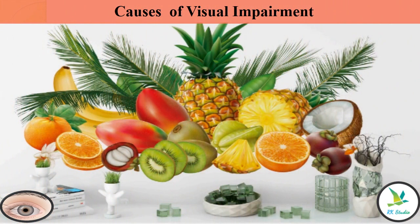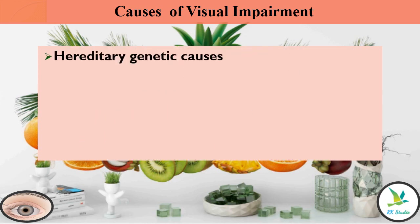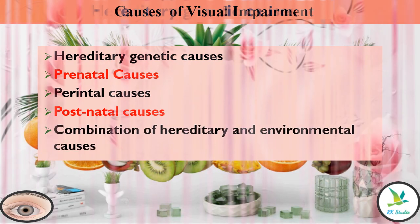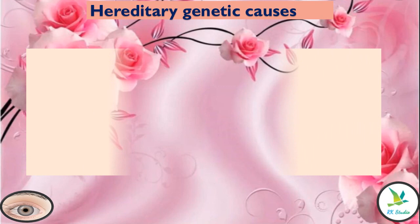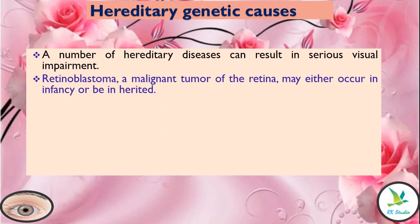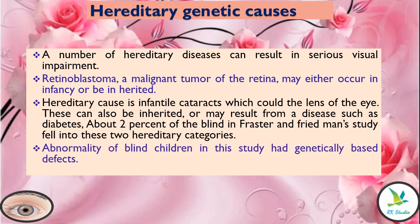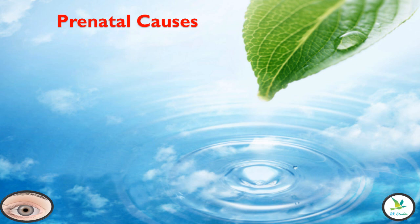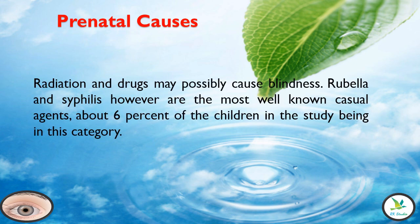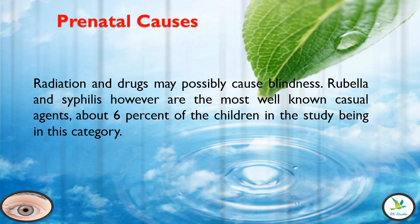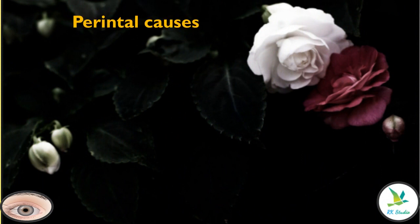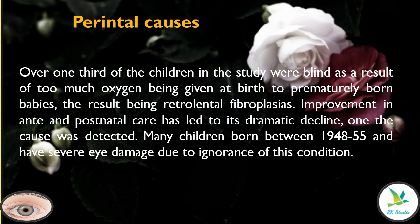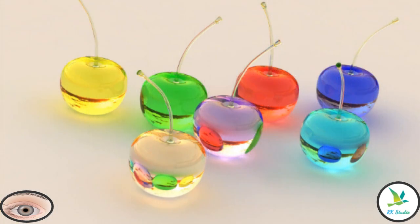Causes of visual impairment. Hereditary causes. Prenatal causes. Parental causes. Post and natal causes.